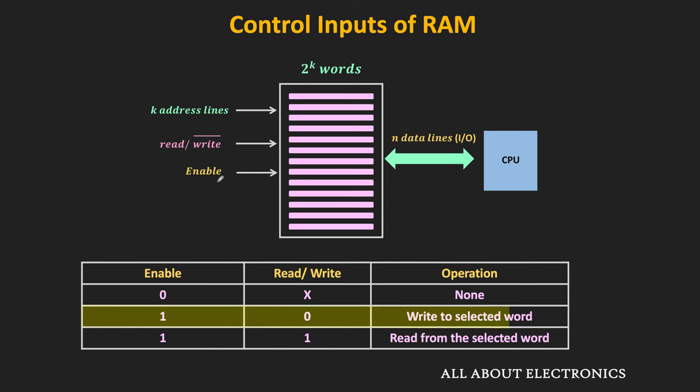Similarly, when the enable signal is high and the read-write control signal is equal to 0, the memory will perform the write operation. Depending on the address on the address line, the memory will write the data to the specific word.